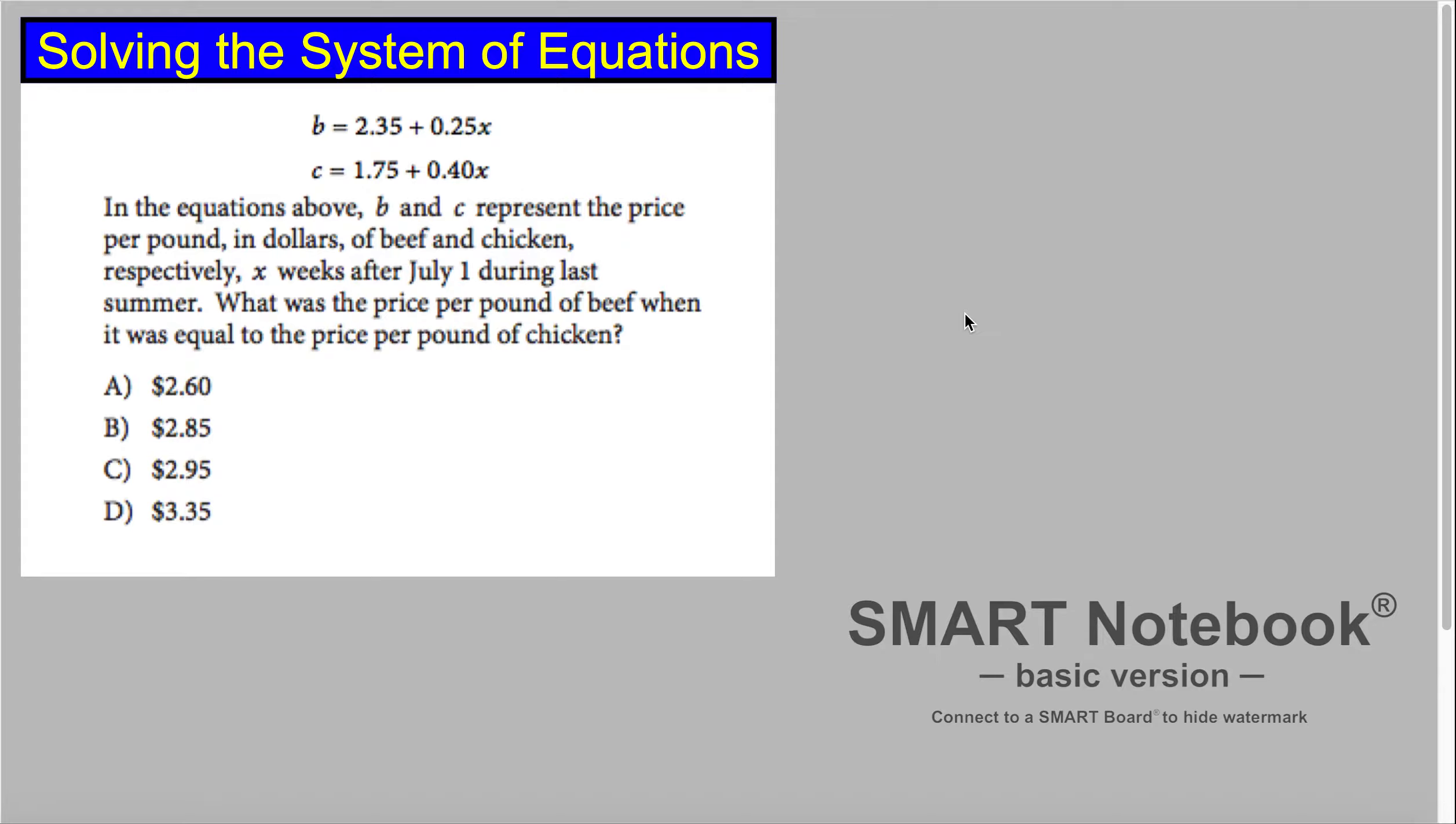In the equations above, B and C represent the price per pound in dollars of beef and chicken respectively, x weeks after July 1st during last summer. What was the price per pound of beef when it was equal to the price per pound of chicken?